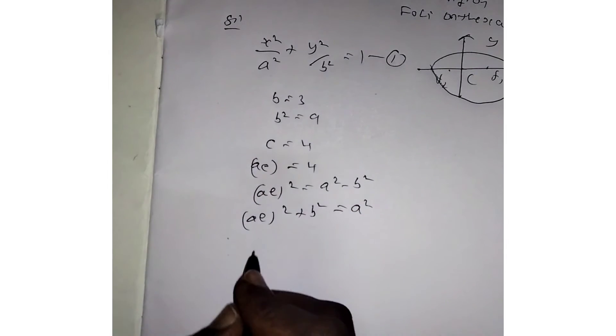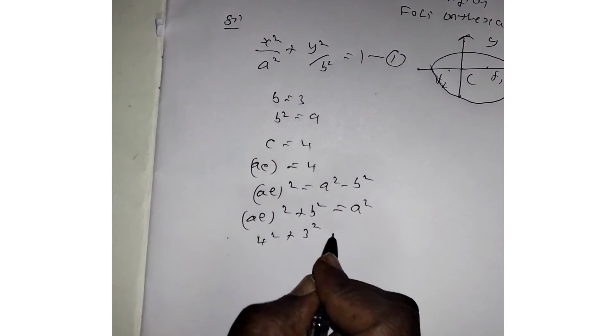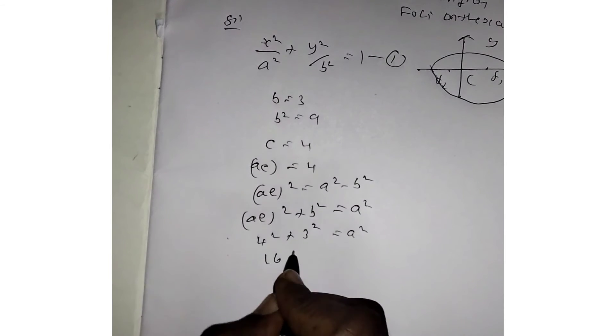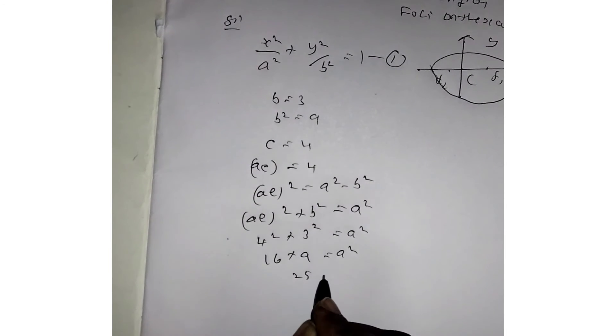The ae value is 4, so we have 4 squared. The b value is 3, so we have 3 squared. Therefore, a² equals 16 plus 9, giving us a² equals 25 and a equals 5.